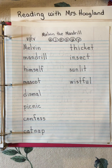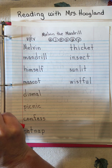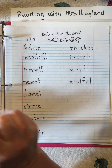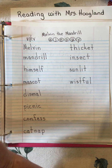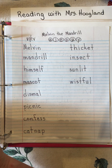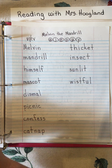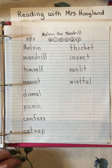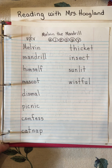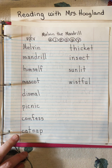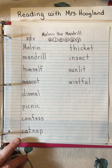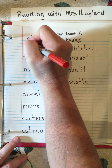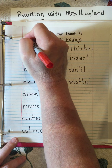The story is called Melvin the Mandrill. I've already written the words down for time's sake, so you can pause the video now and write these words down, or continue to follow along and tell me where to split them. The first thing we're always going to look for is vowels - we are always going to dot and circle our vowels.